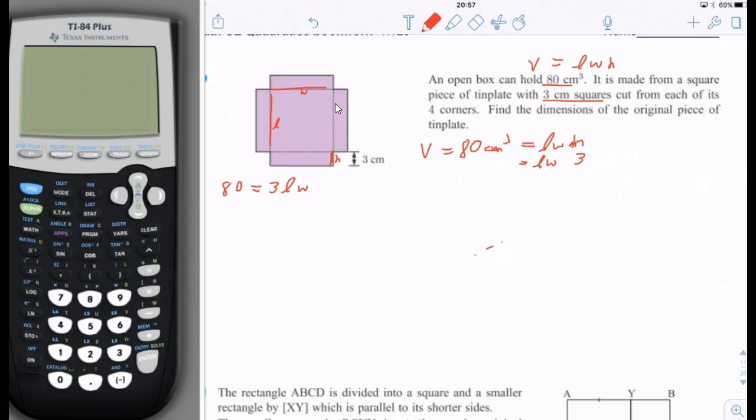We know that 80 is equal to 3 times L times W, length. We also know that there is a relationship between length and width because it says that this purple drawing is actually square. So length and width, if this is a square, are going to be the same. Let's call both length and width to be x. So 80 is equal to 3x squared.